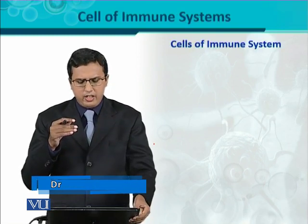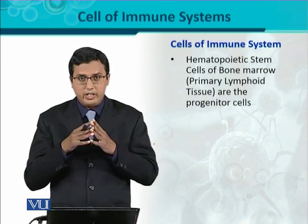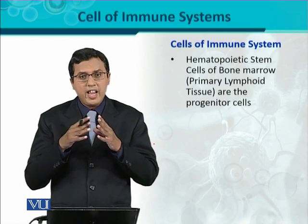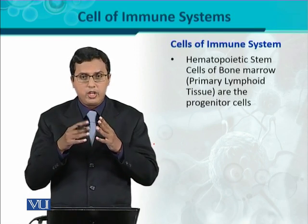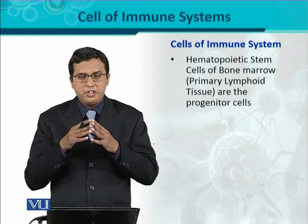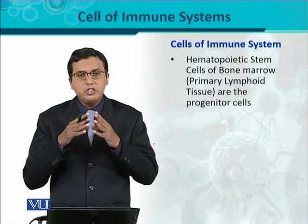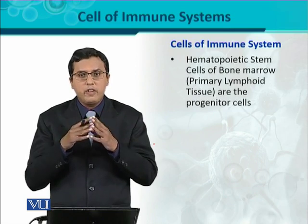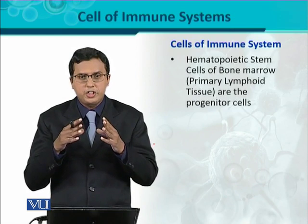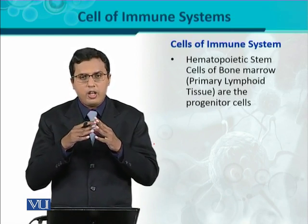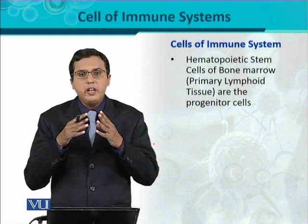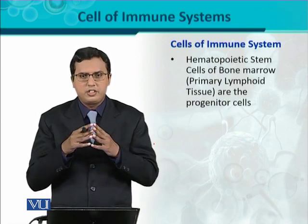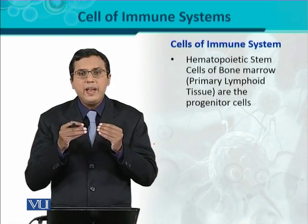So in the immune system there are so many different varieties of immune cells. How do those immune cells originate? They are produced — as I mentioned earlier — through the role of the primary central or generative lymphoid organs or tissues. They are very important kyunke wo generative hain in nature, like bone marrow or thymus. They are generative lymphoid tissues.